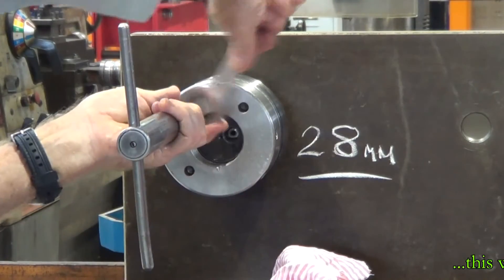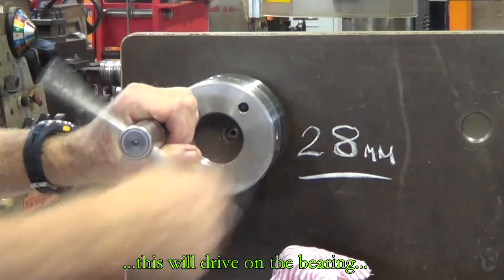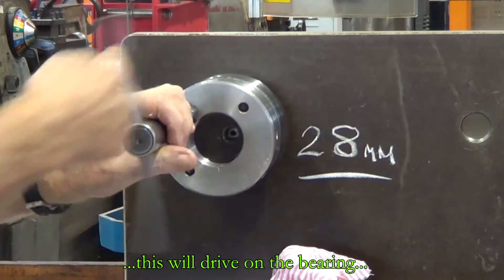Screw the T-handle in. That forces the hydraulic nut to push the bearing up the shaft.